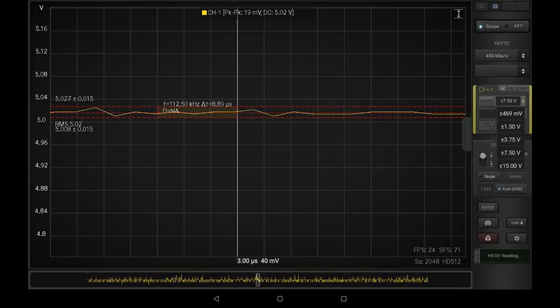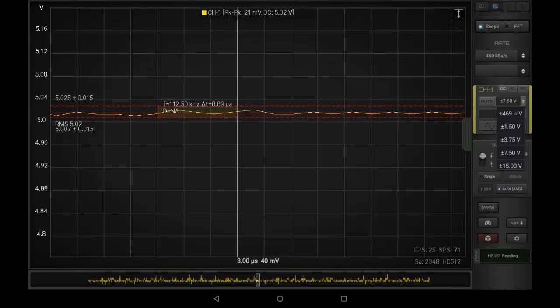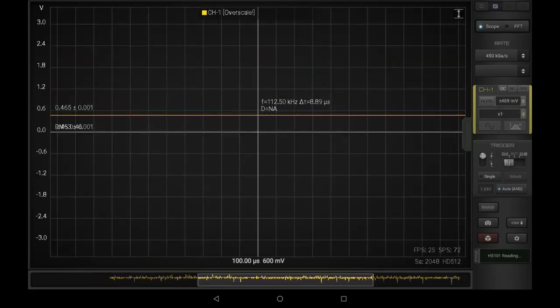all the way down to plus or minus 469 millivolts. These ranges allow us to always be in the sweet spot for the ADC, the Analog Digital Converter.